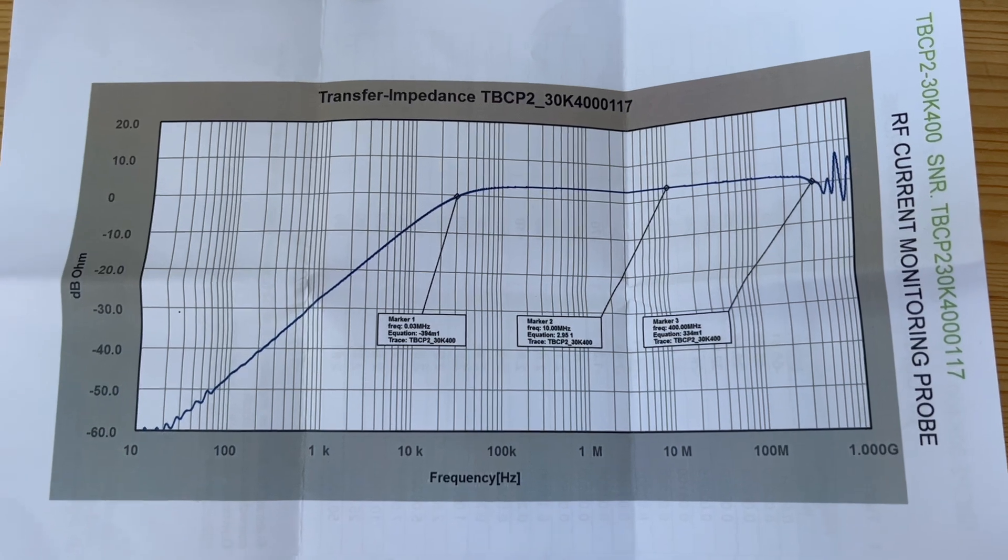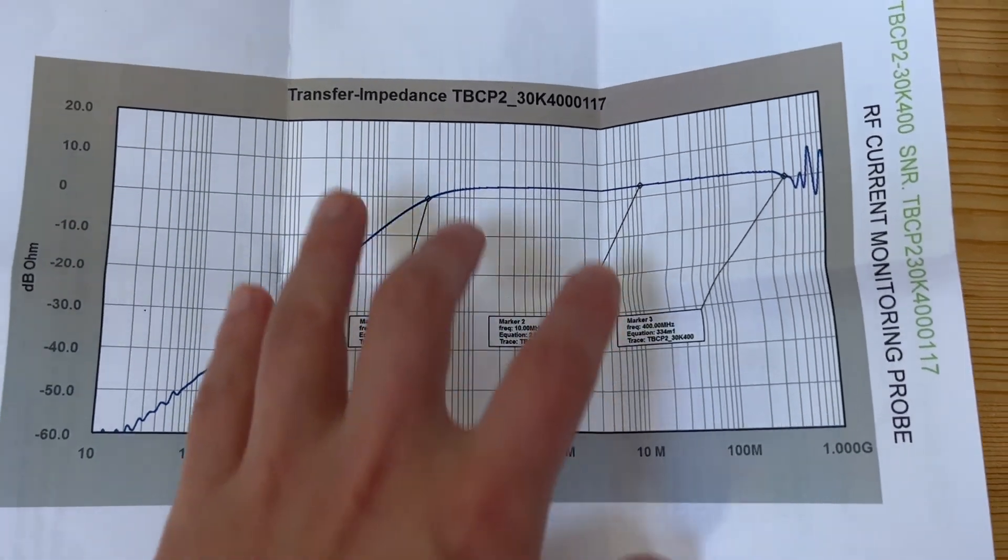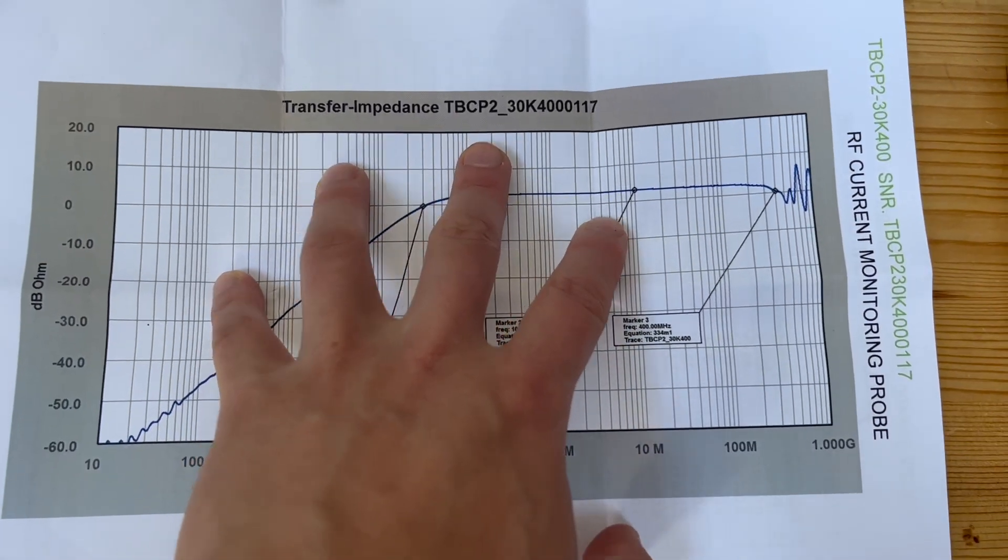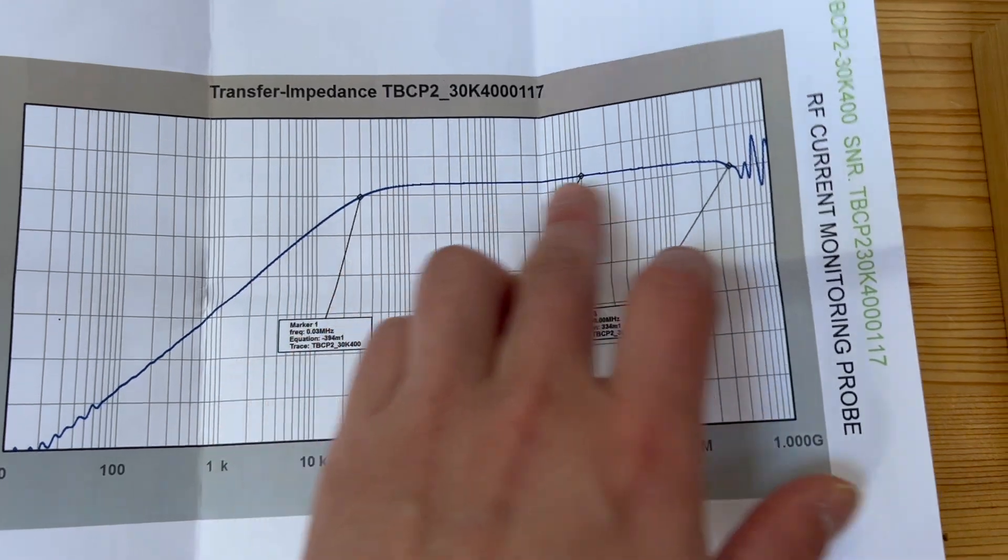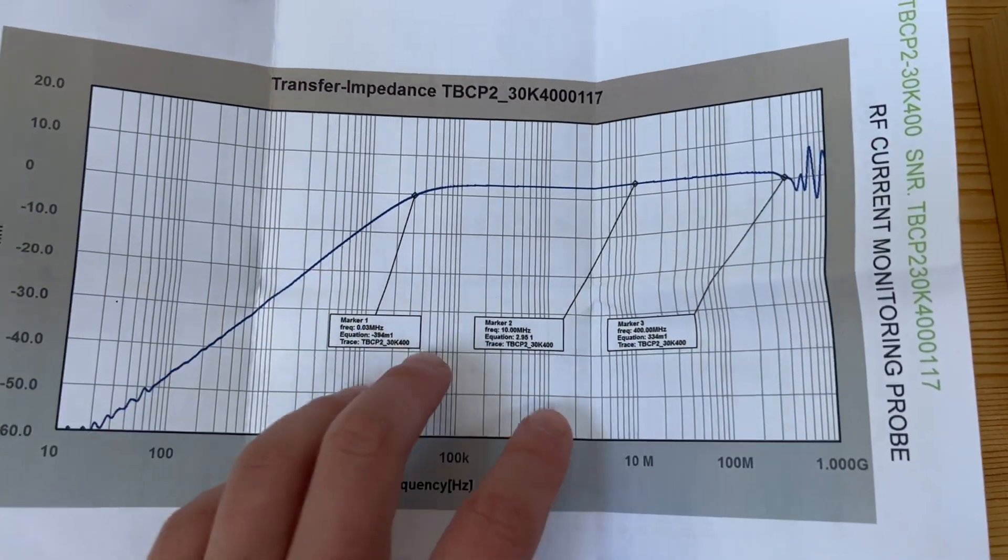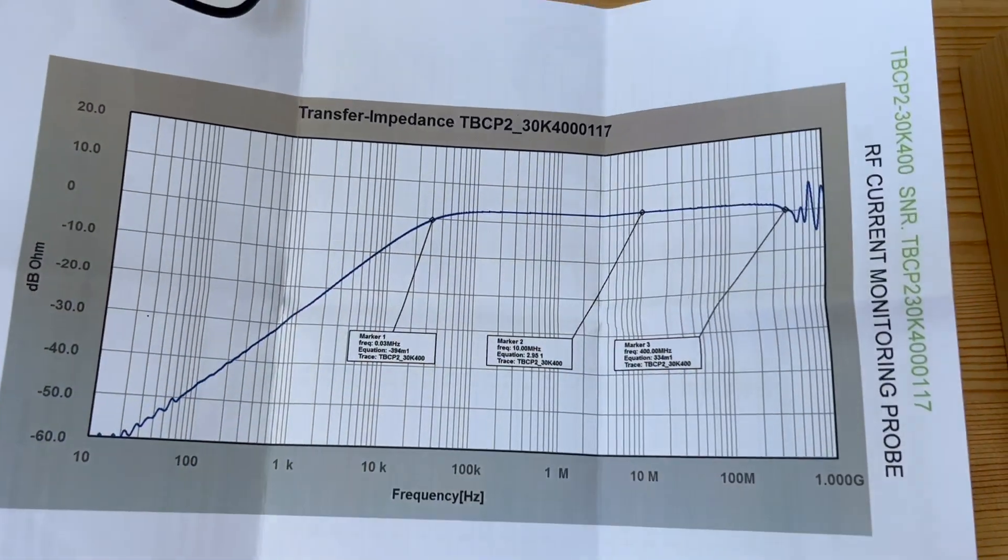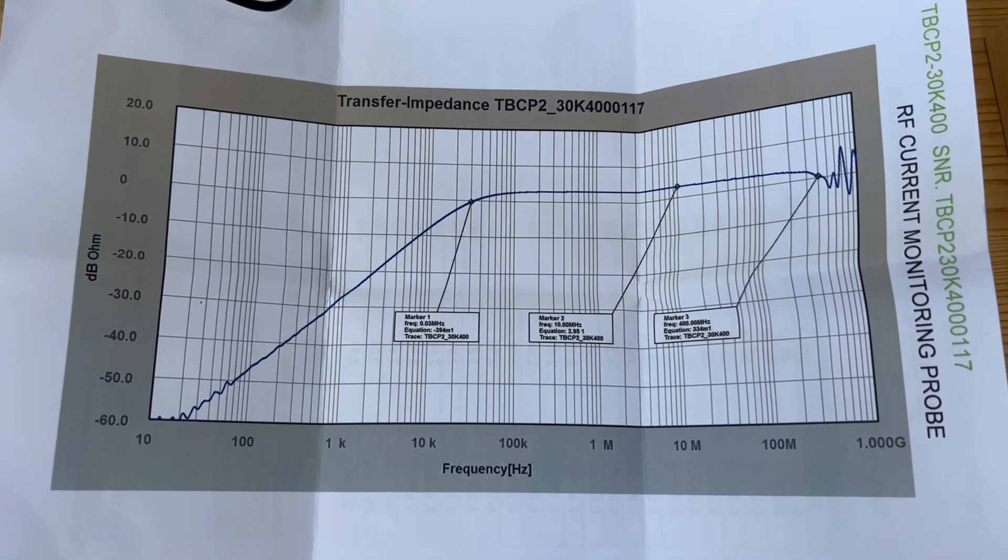Thanks for watching this episode. In our next episode, we're going to explain what is the transfer impedance of a current probe, and what does it really mean in terms of this region and this region. We call this region, this region, different regions, and how we can use the datasheet to help us determine the current level we measure. See you next time. Thank you.